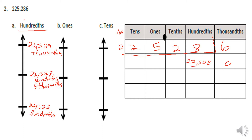Coming back to our number, we had twenty-two thousand five hundred twenty-eight and six thousandths. Plotting that on the vertical number line, it falls approximately here. Since six thousandths is one more than five thousandths, it's at or above the center line, so we round to twenty-two thousand five hundred twenty-nine hundreds.